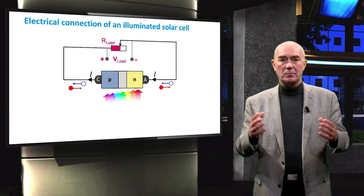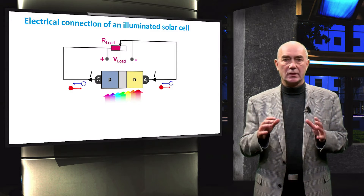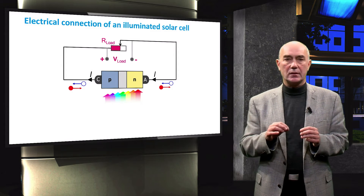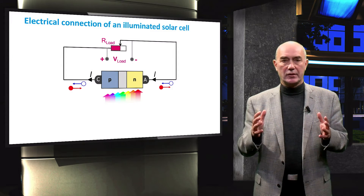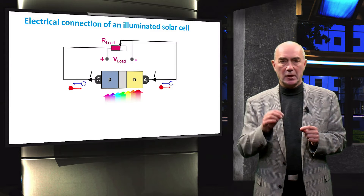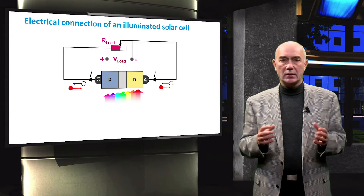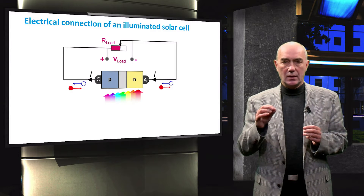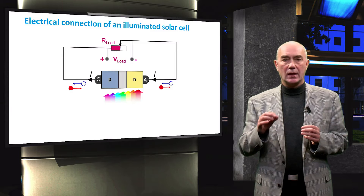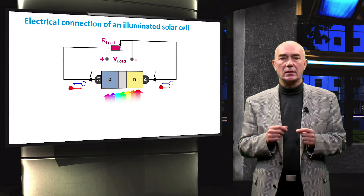This schematic picture shows an illuminated PN junction diode connected through an external circuit with a load. There is a current generated by the diode that flows through the load. By changing the resistance of the load, we manipulate the voltage drop at the load and therefore also the power consumed by the load.